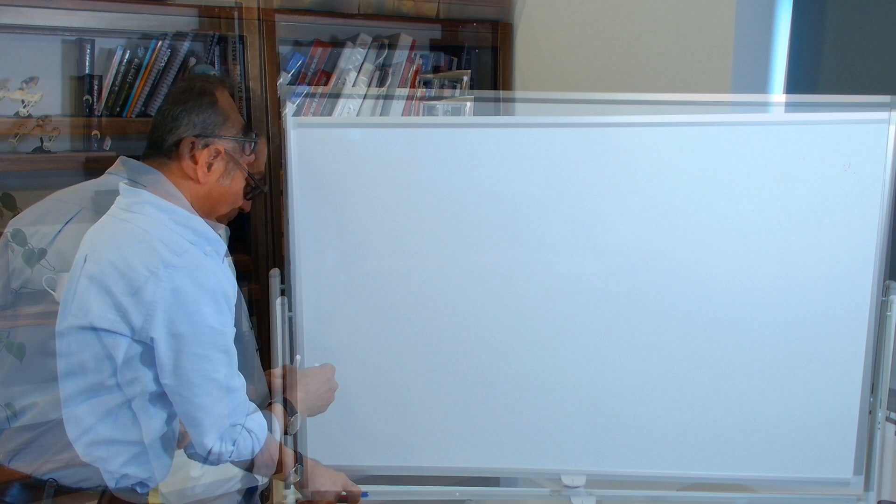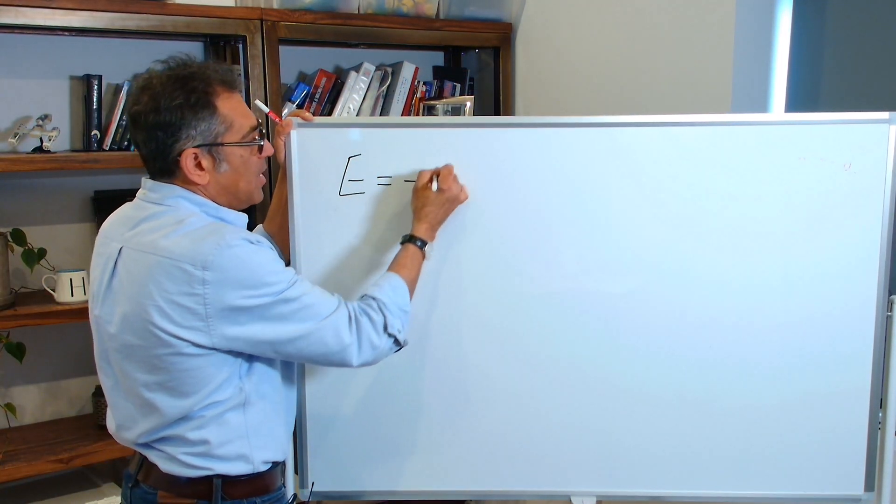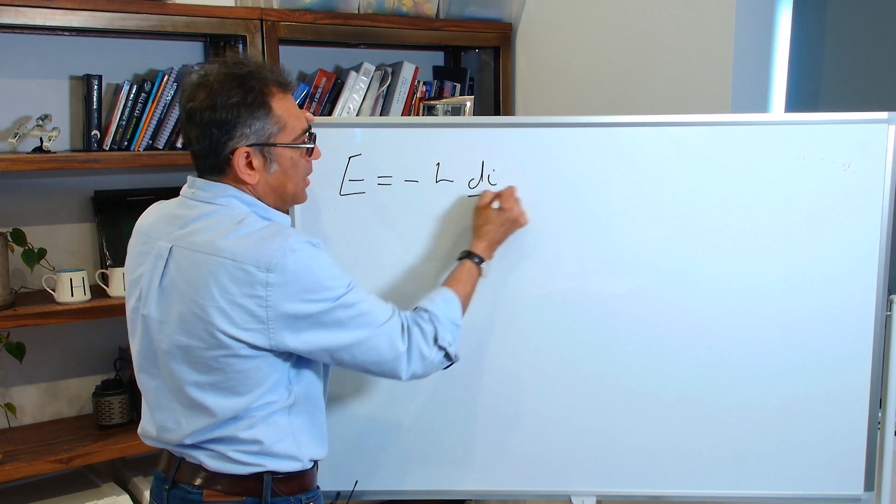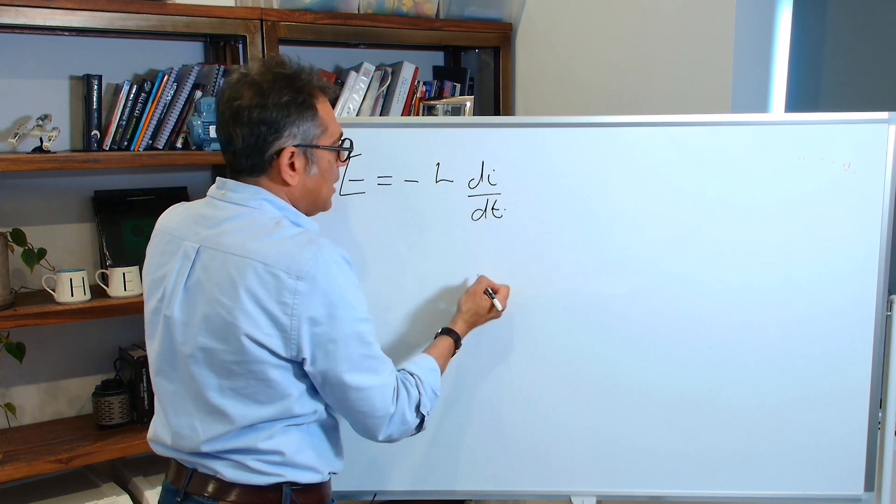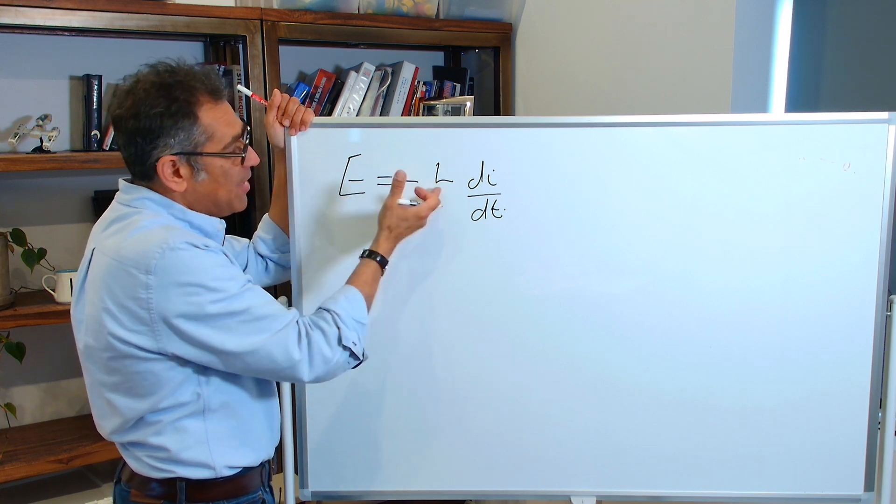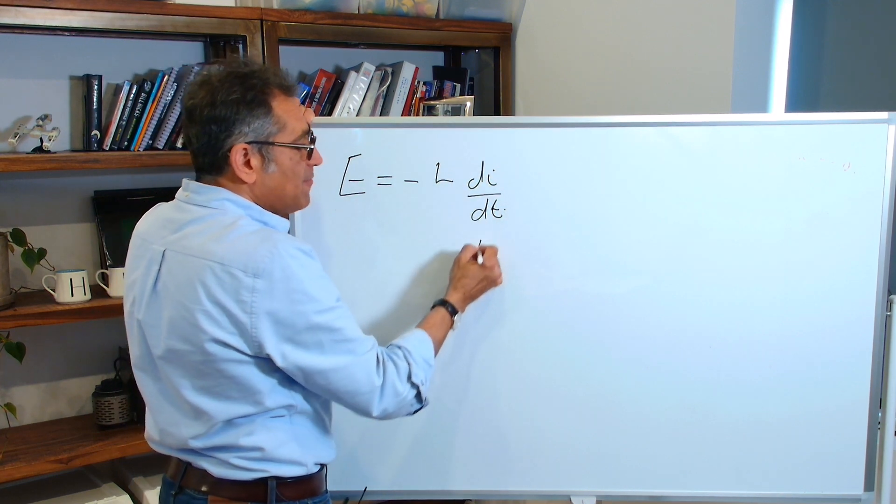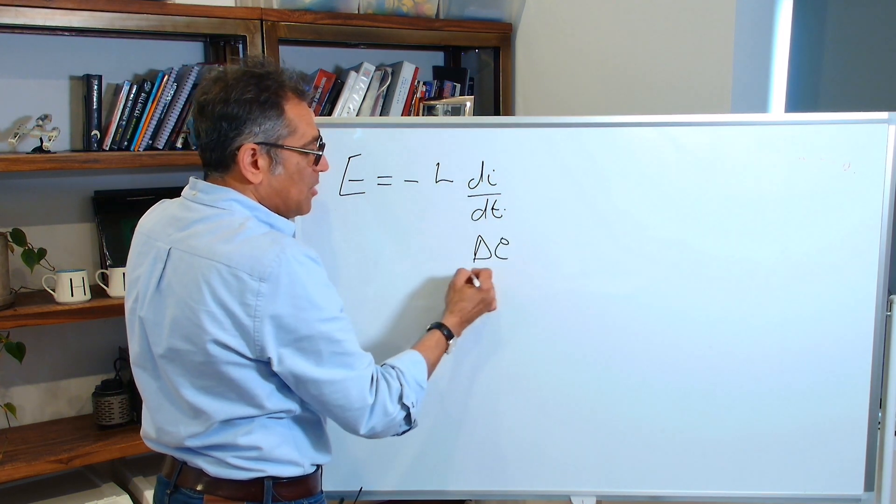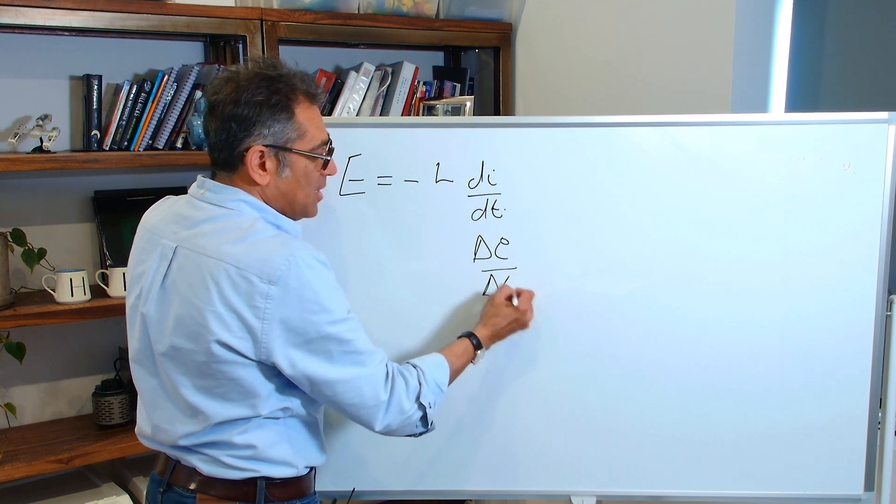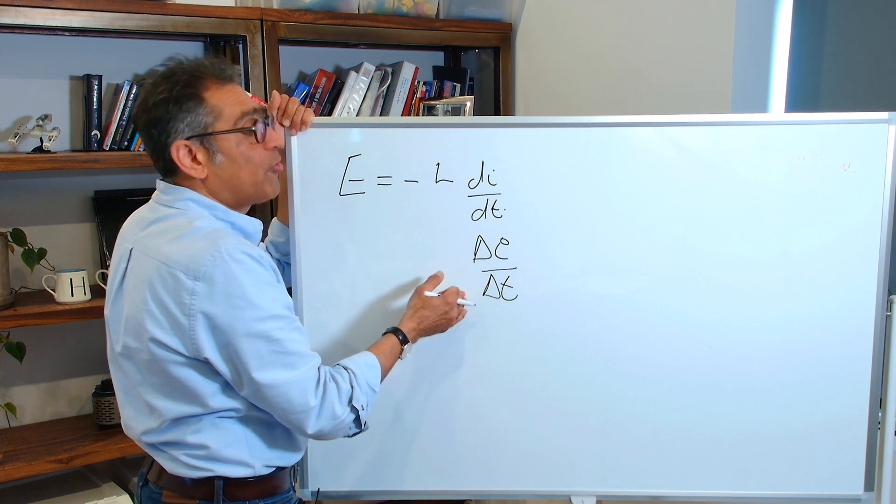So this leads us to the standard equation for the inductor, which is E, the back EMF of the inductor, is equal to minus L di dt. And this is, of course, the famous Faraday's and Lenz's law. E is the back EMF, L is the inductance that we have. Please don't be scared of this differential di by dt, because in vast majority of cases in power supply, we approximate that to the straight lines. And therefore, it becomes a delta i by delta t for a straight line.